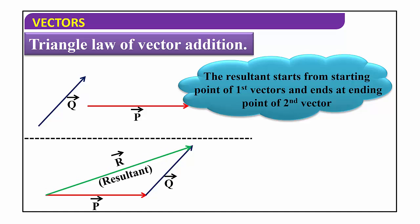The resultant vector R is drawn from the starting point of the first vector to the ending point of the second vector — that gives the resultant vector. Remember the statement: the length of a side gives magnitude, and the arrow mark gives direction. When two vectors of the same type are represented by two sides of a triangle in the same order, then the resultant is the third side taken in the opposite direction.